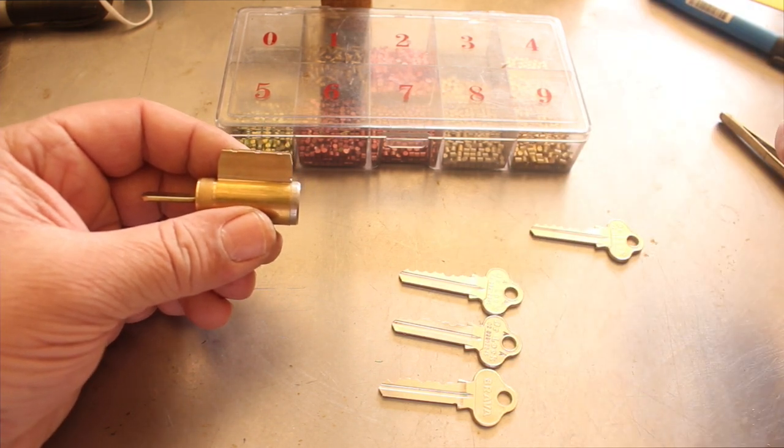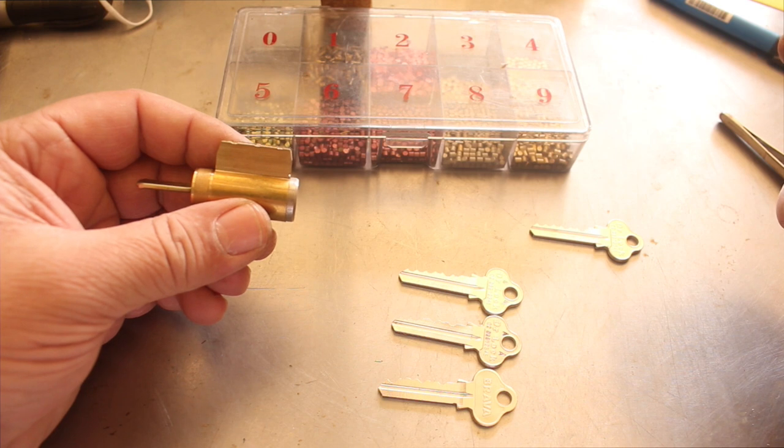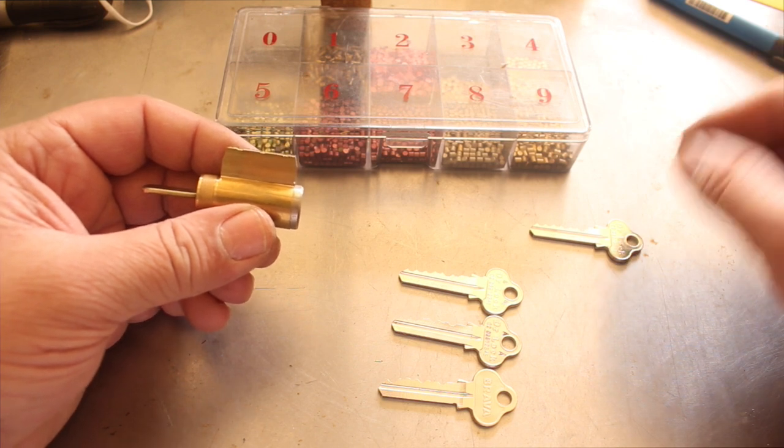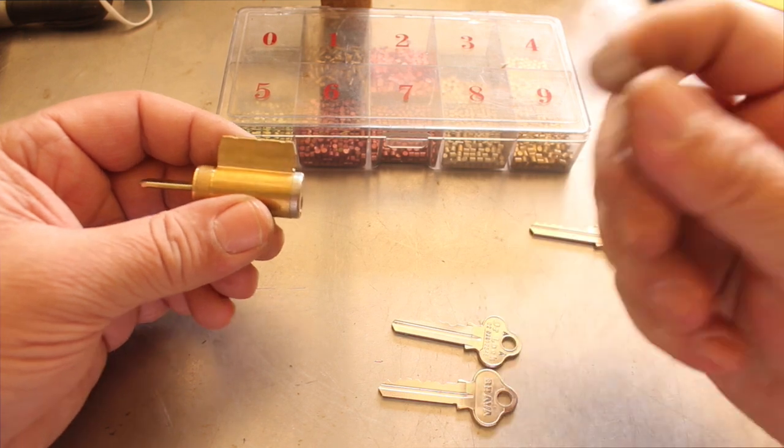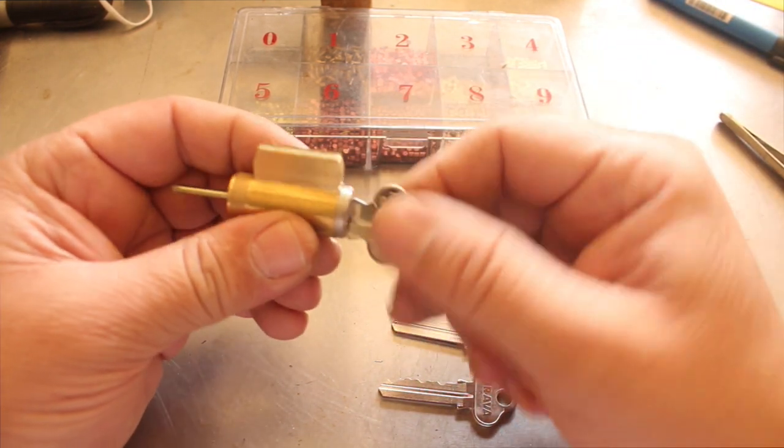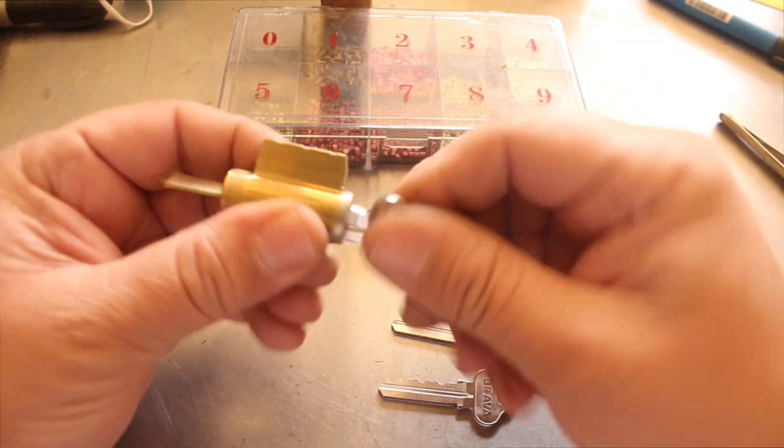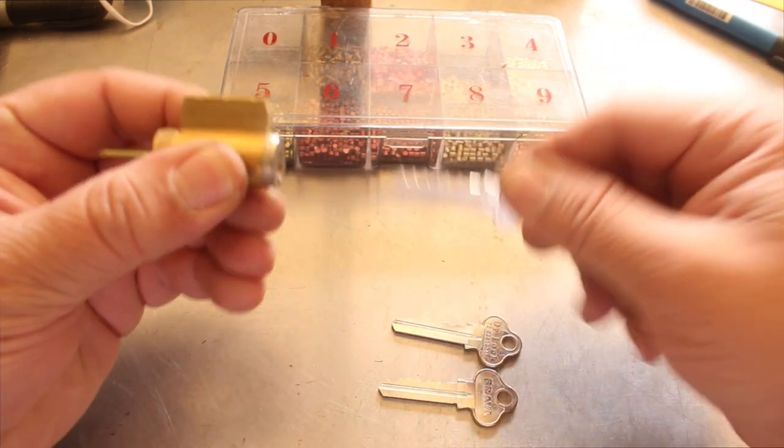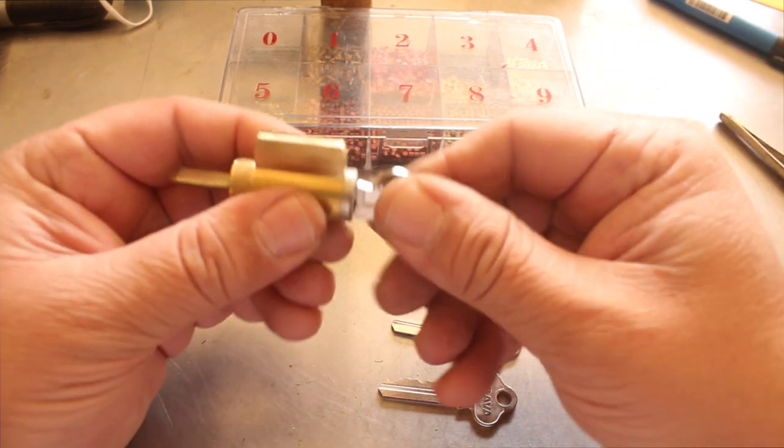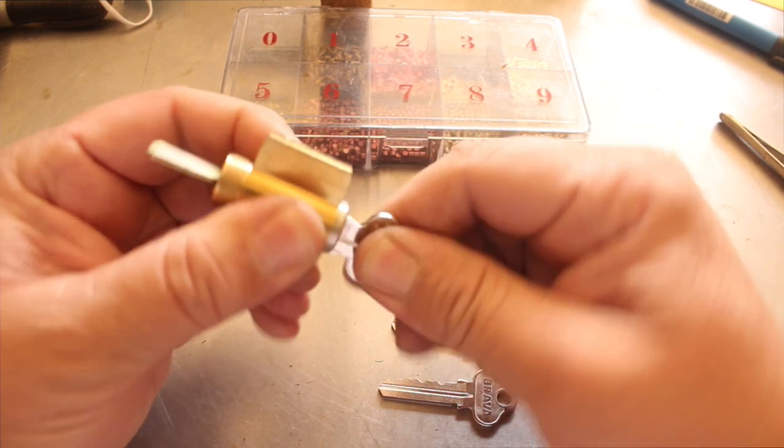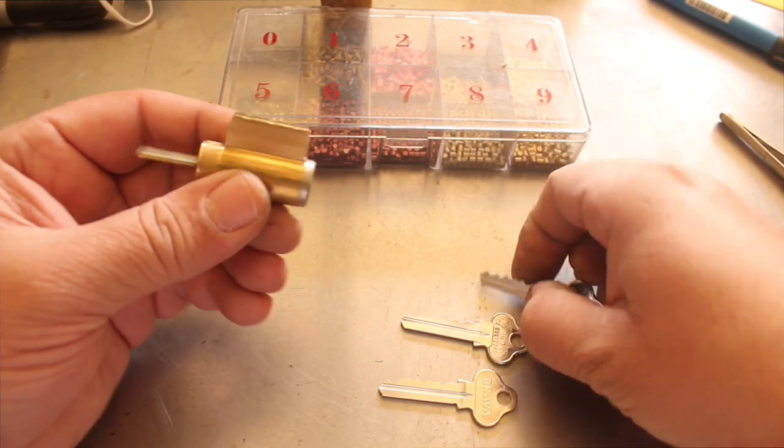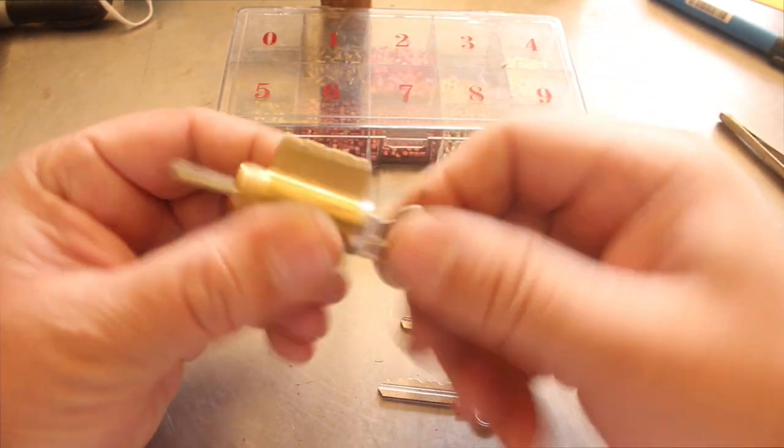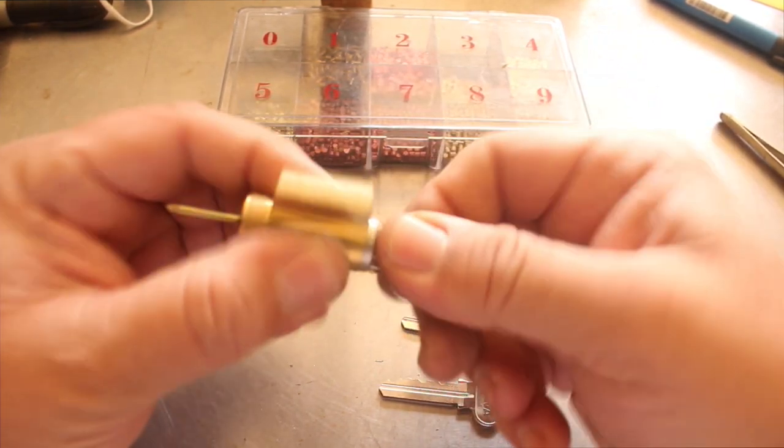So then what we do is we pick up key B and we turn it in there. That will also turn the lock. You turn left and right, turning the lock. But what will actually happen is that when key A comes back, it no longer works. So we can throw that one in the bin. So now we keep using key B and it works, no problems.